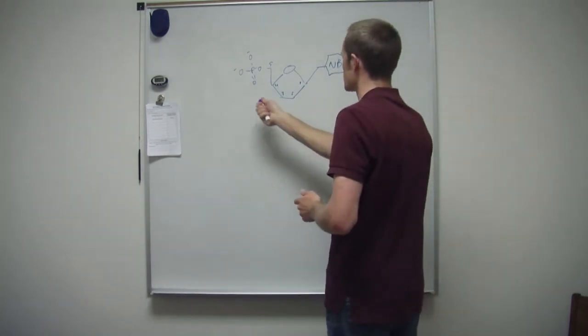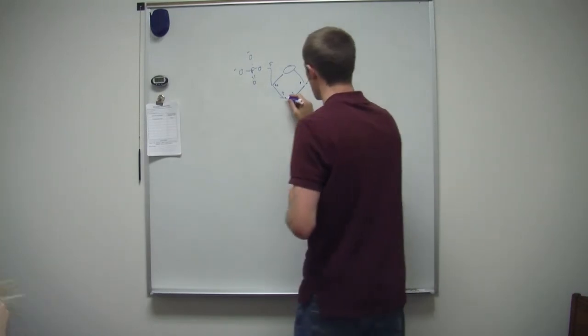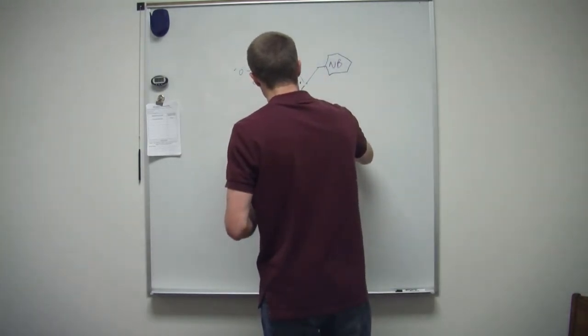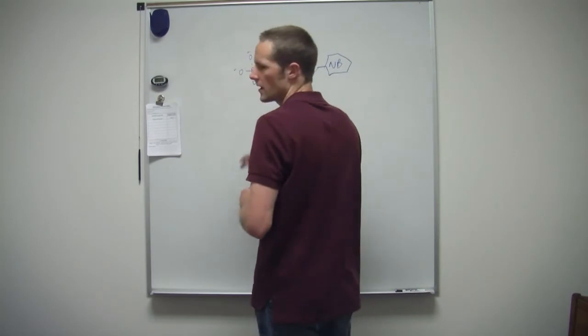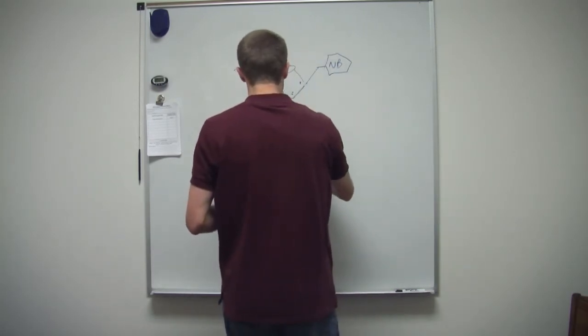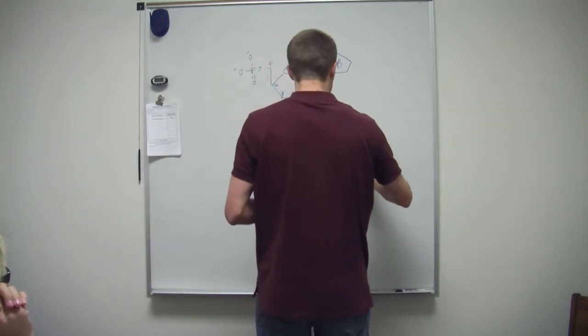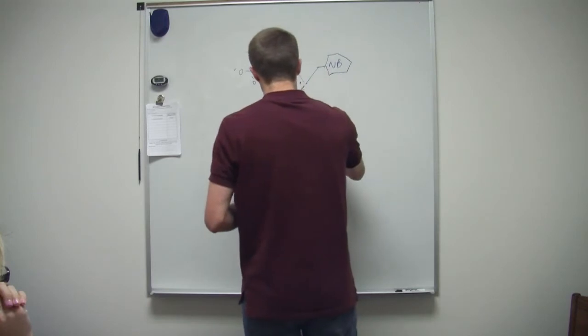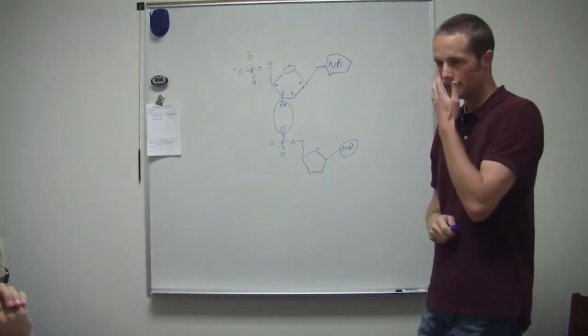Yes. So those are the carbons the way they're arranged. And then right here there is a hydroxyl group. Okay. And it binds to the phosphate of the bottom sugar. Okay. So the phosphodiester linkage happens right there. Okay. It binds to the hydroxyl and the phosphate.